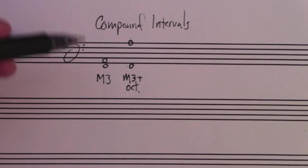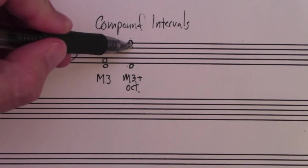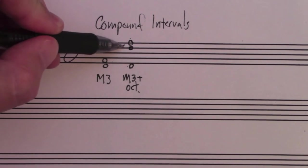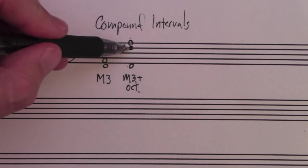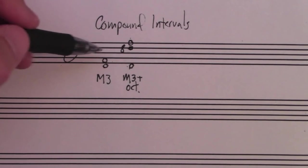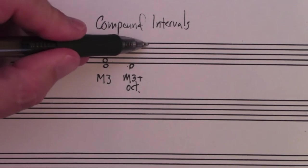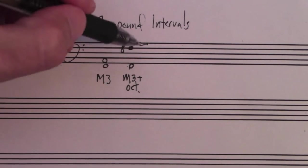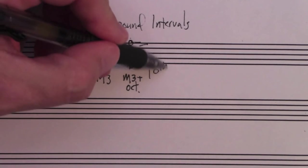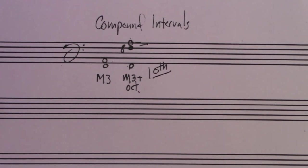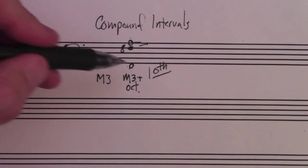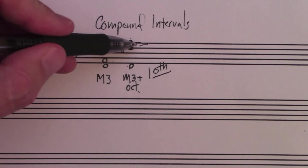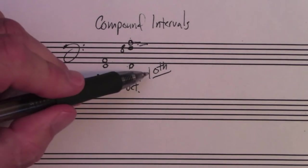Thing is, how much is an octave? An octave is eight. This line from F to F is eight. The space is nine, ten. This is actually a tenth. Do you see how we got that? An octave is eight, then nine, and then ten. It's a tenth.